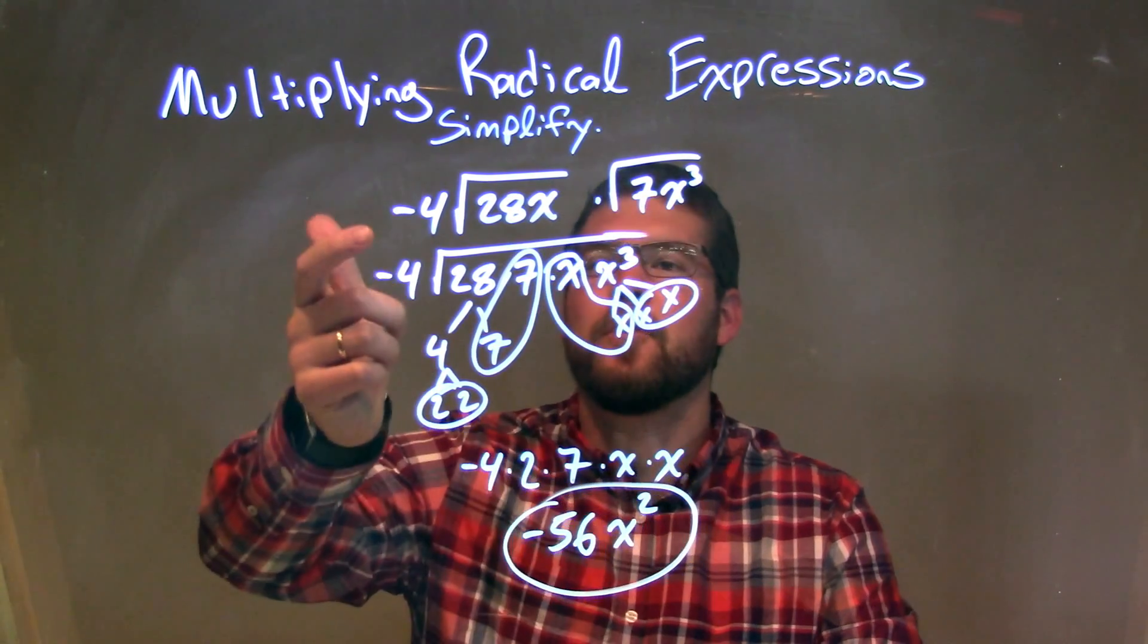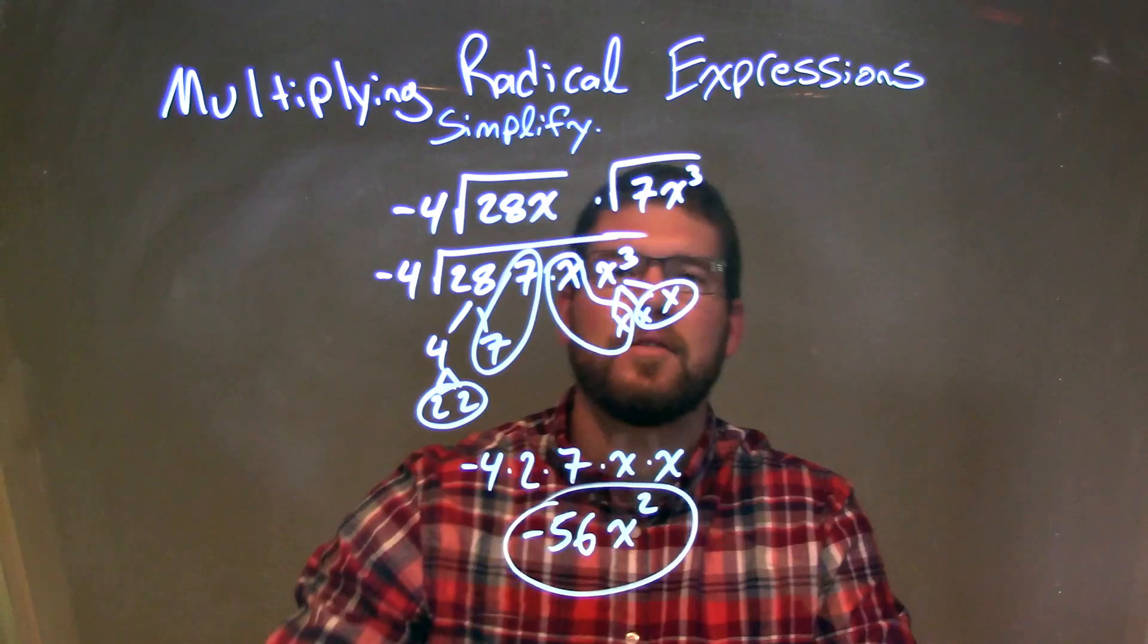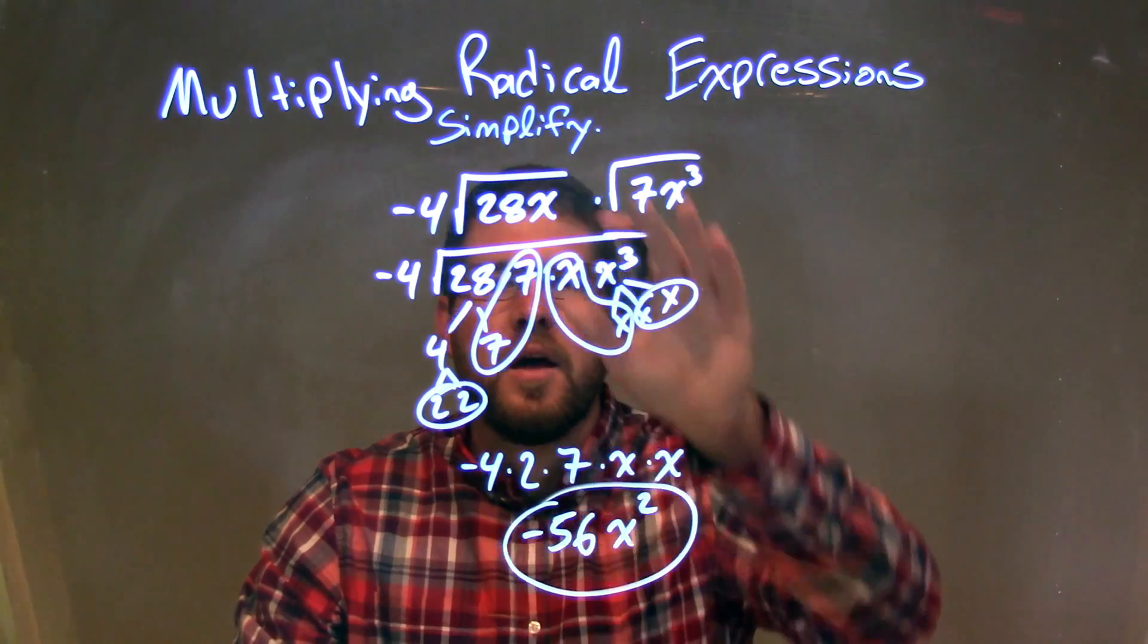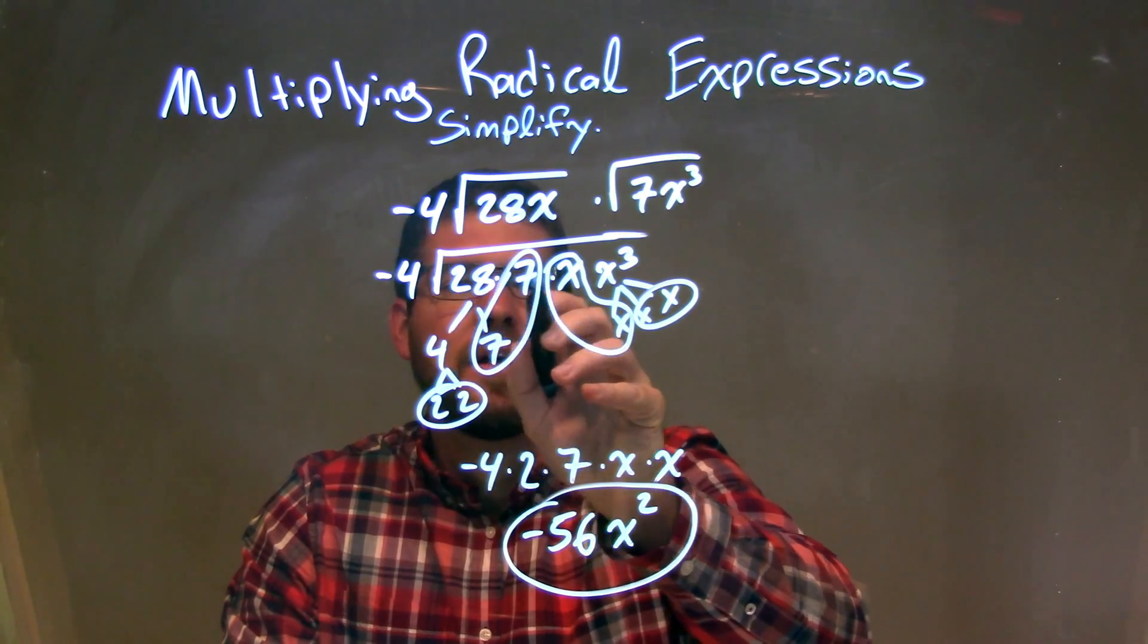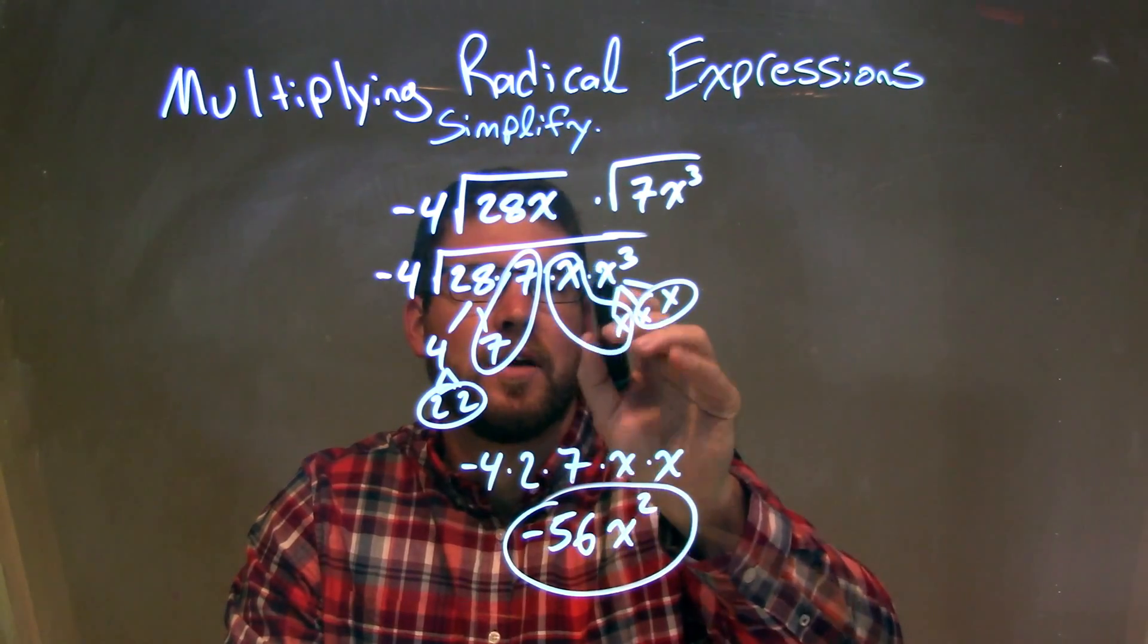So let's recap. We're given negative 4 times the square root of 28x times the square root of 7x to the third. I rearrange this to have it all under one big square root, and put my numbers together. 28 times 7 times x times x to the third.